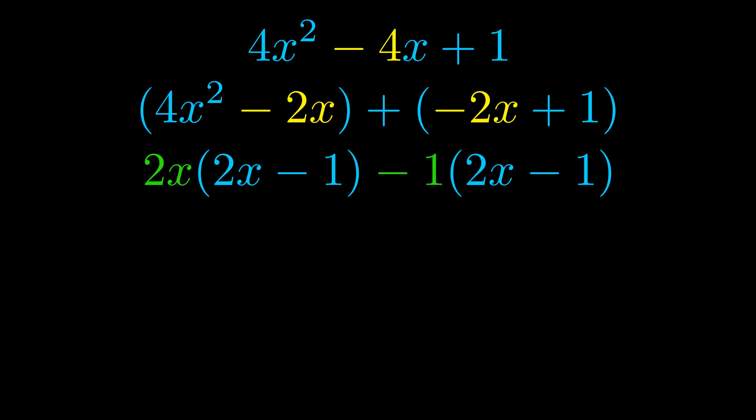Notice also how what remains inside of the parentheses is the same in both cases. The blue values are the same. Those blue values will become one of our factors and we will combine the two green values, the GCFs that we pulled out, to get the other one. And that is our fully factored equation.